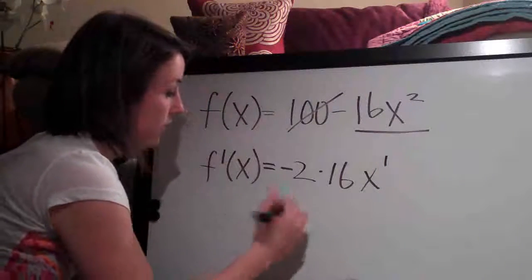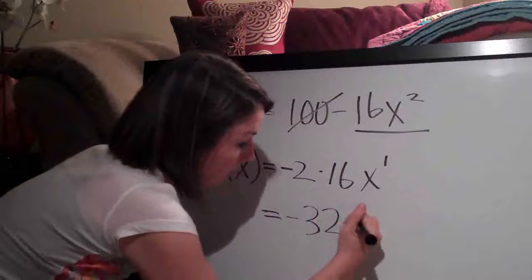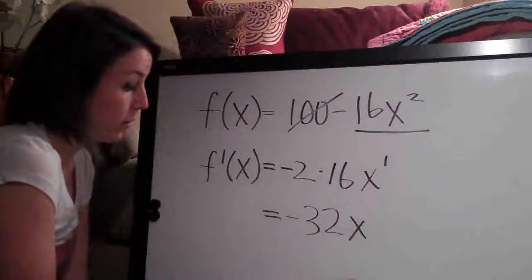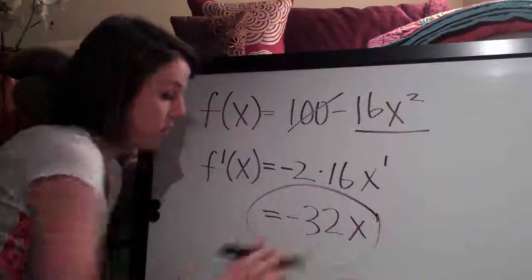The derivative is negative 2 times 16, 32 x and then we can just drop the 1 obviously as the exponent. So negative 32 x here is our answer.